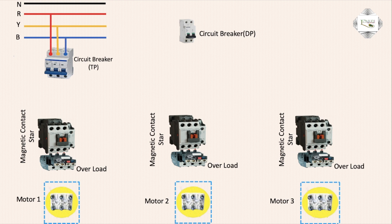For the first motor: the TP input takes red, yellow, and blue phases. The TP outgoing connects to the magnetic contactor input, and the magnetic contactor output goes to the motor terminals U1, V1, W1.